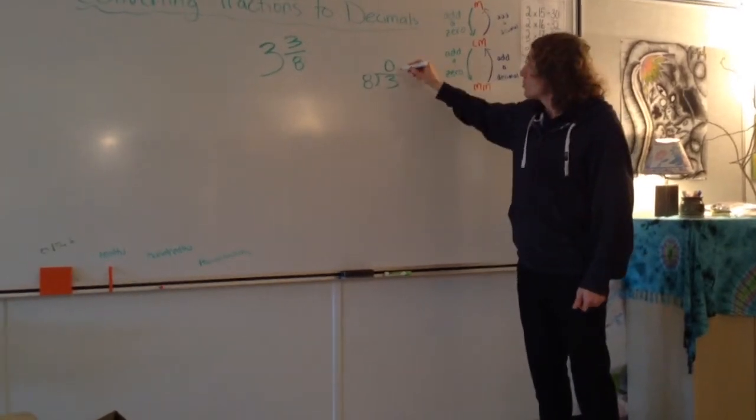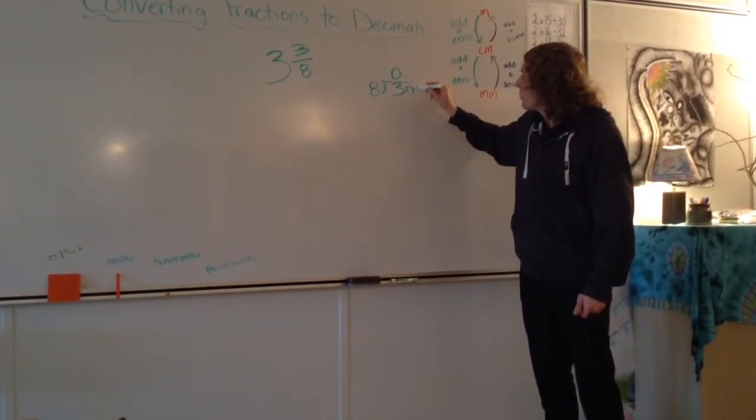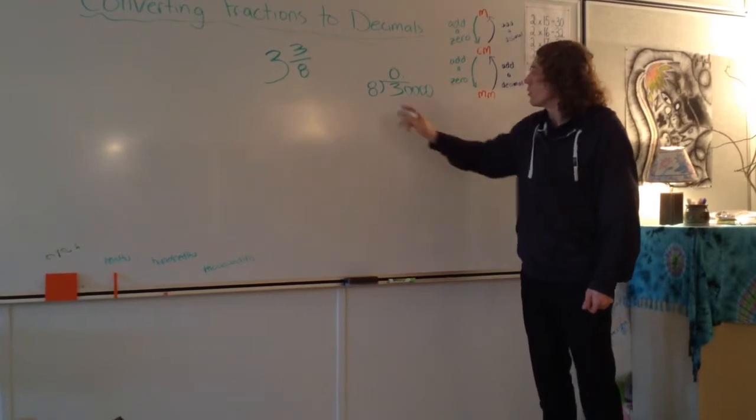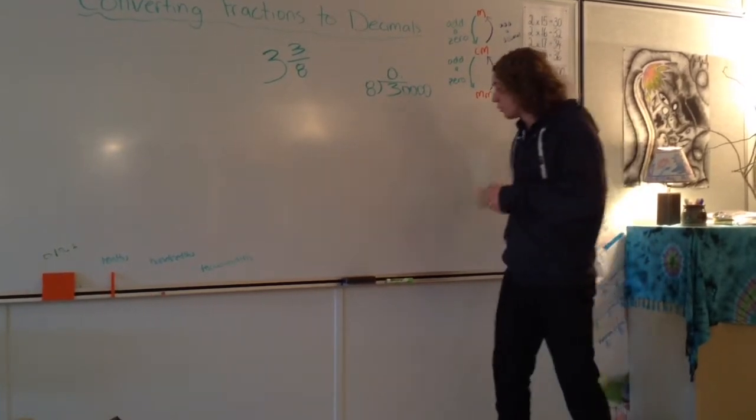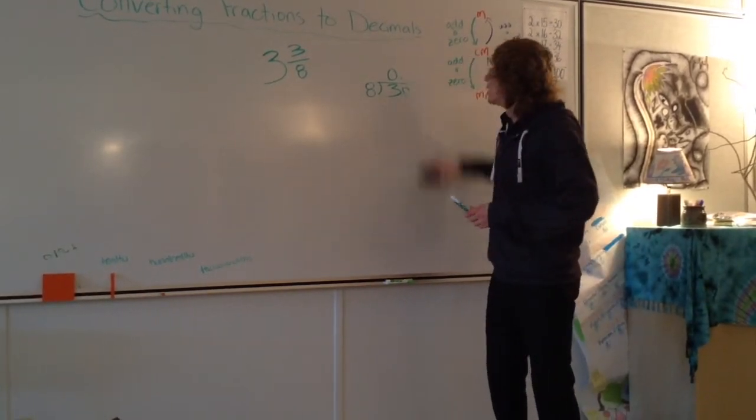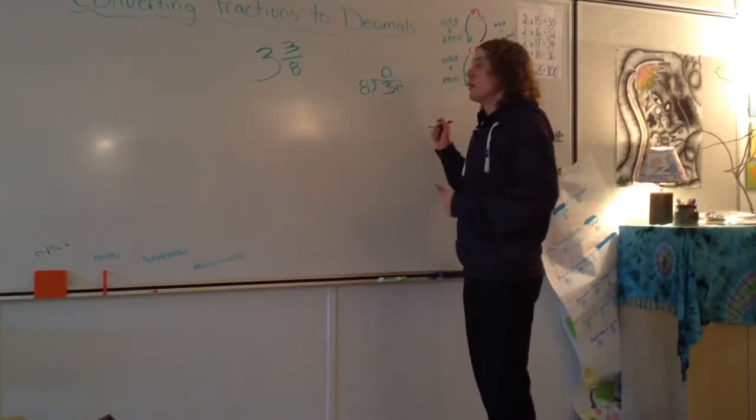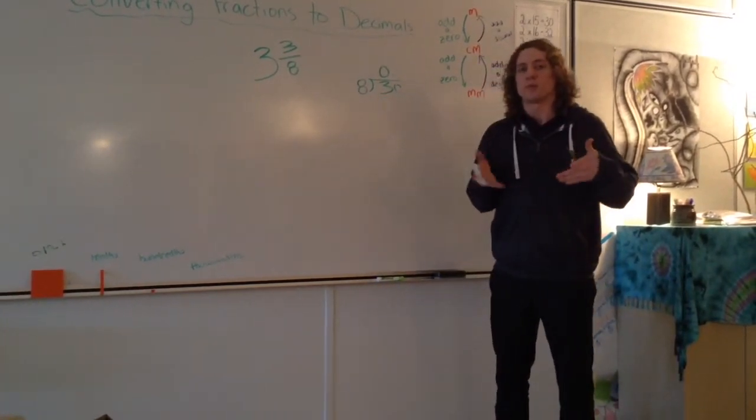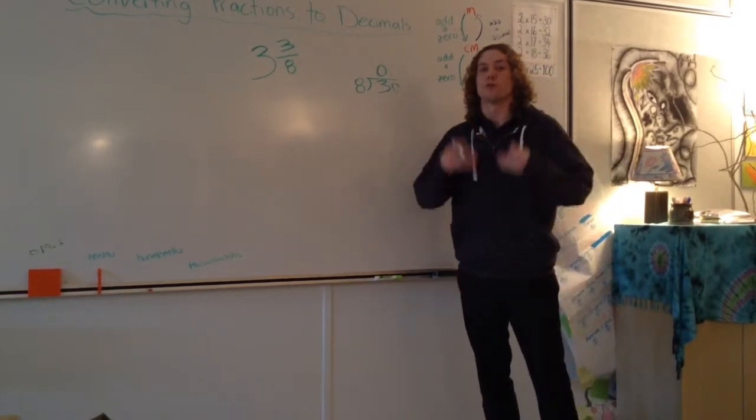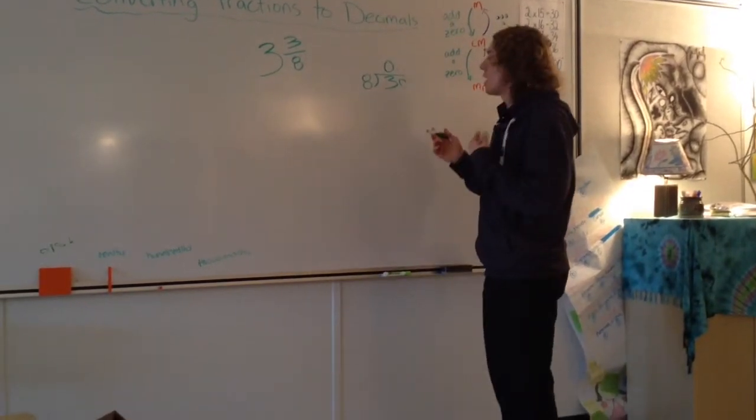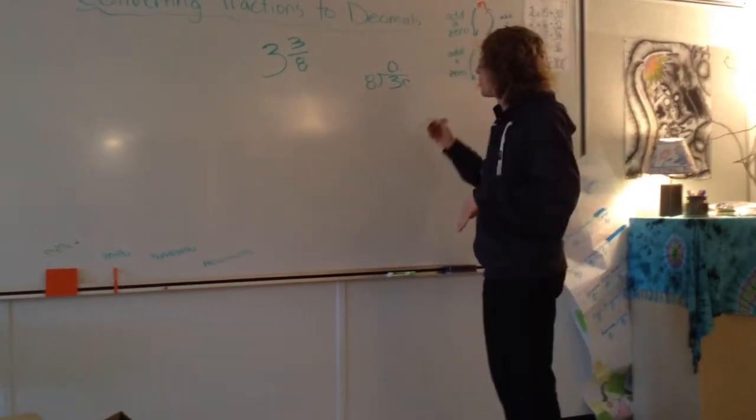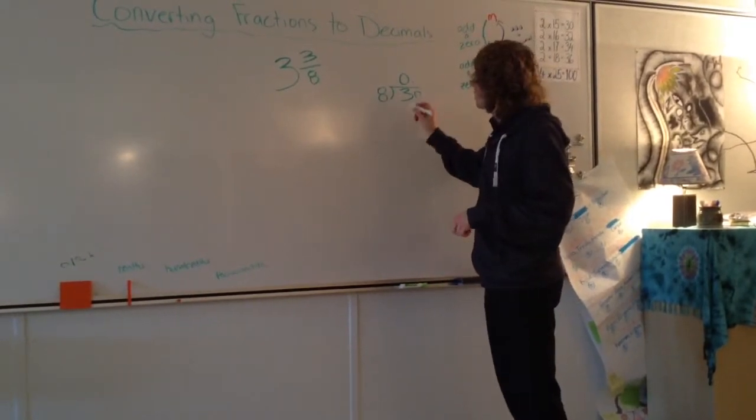Now if we put a decimal here, that means that we can put as many zeros at the end of this in order to make 8 fit into that. So we'll just do one for now. So 8 goes into 30, it doesn't actually go into 30 an equal amount of times, so we have to get something close but not over that. So if I times 8 by 3, I'll get 24. So I'll do 8 times 3, it'll give me 24.